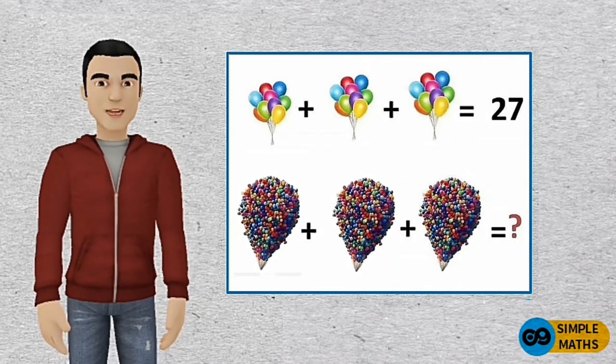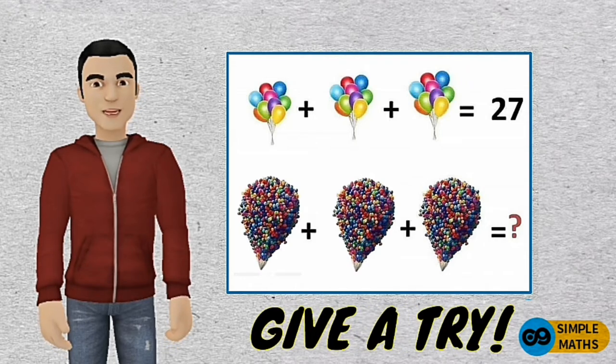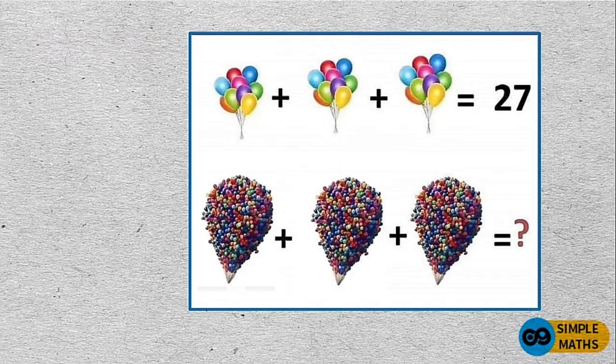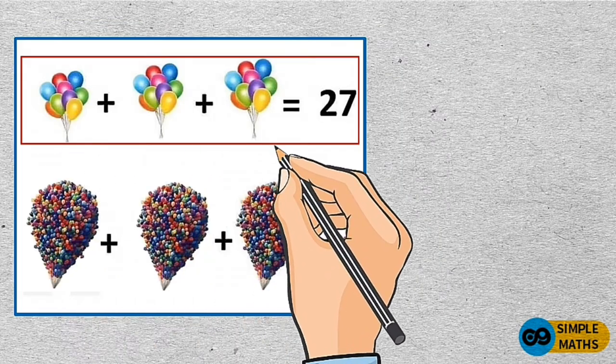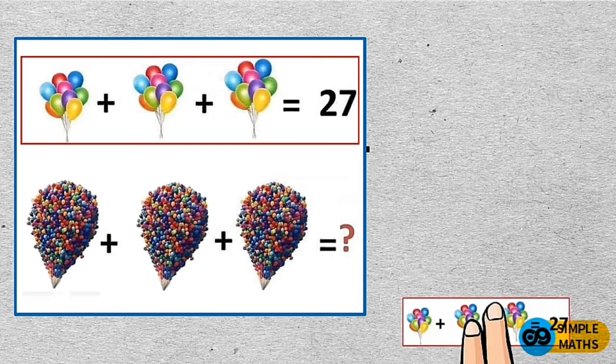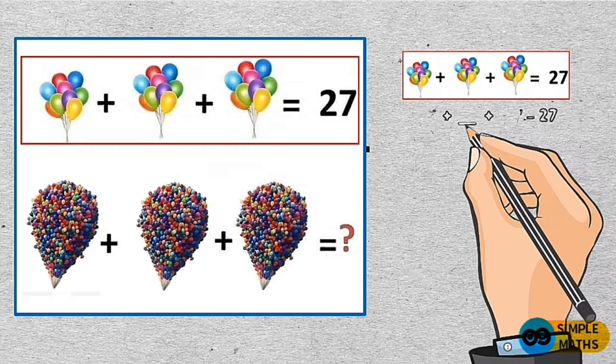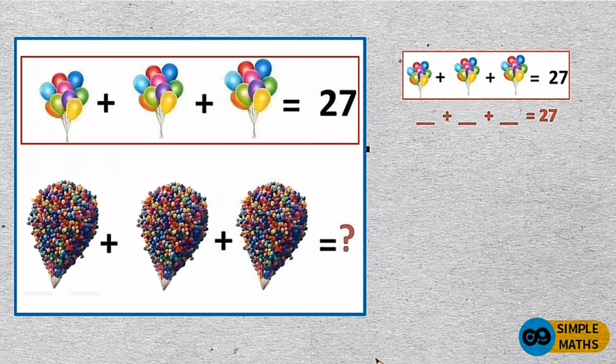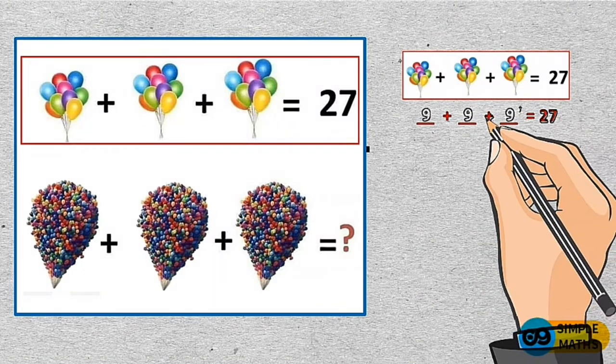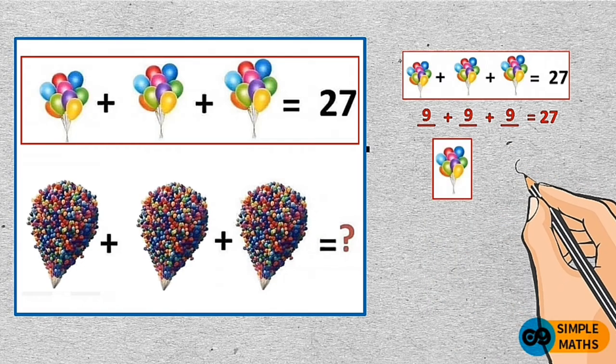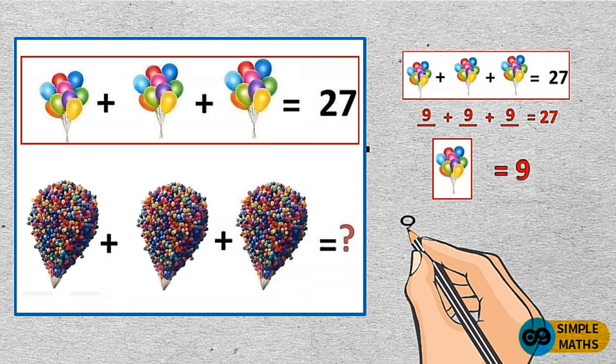Have you seen this math challenge before? If not, then you may want to give it a try. This math challenge is interesting. There are only two equations that we need to work on. Let's start with the first one. The first equation has three of the same images, that means we have to add three numbers to get 27, which is equal to 9 plus 9 plus 9. Therefore, an image of 9 balloons is equal to 9, which also implies that one balloon is equal to 1.